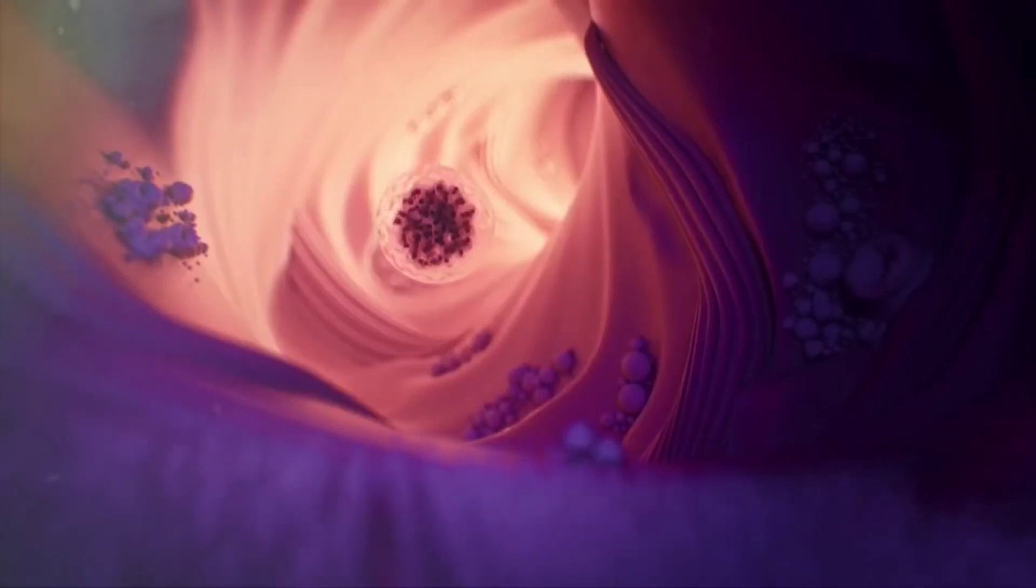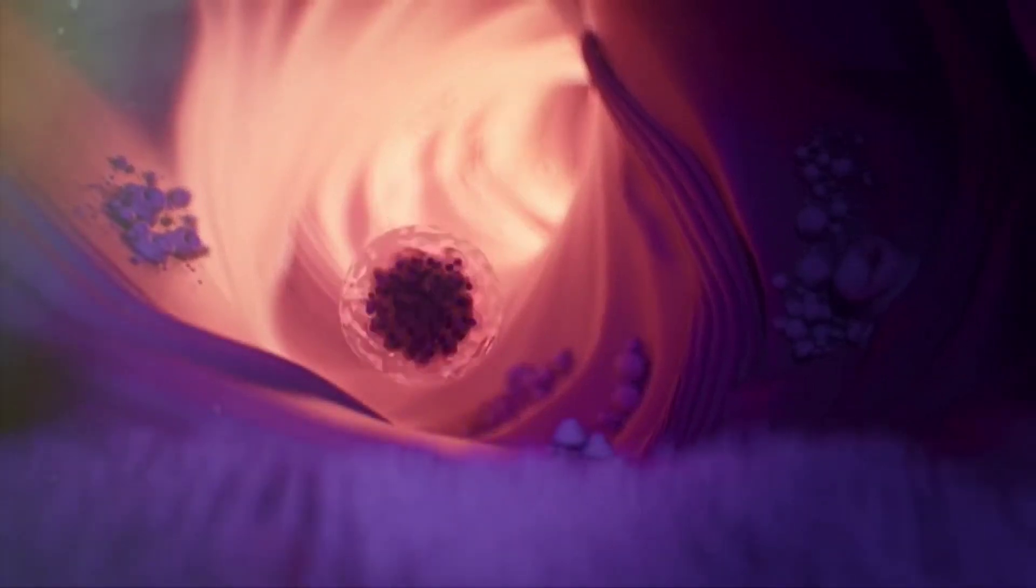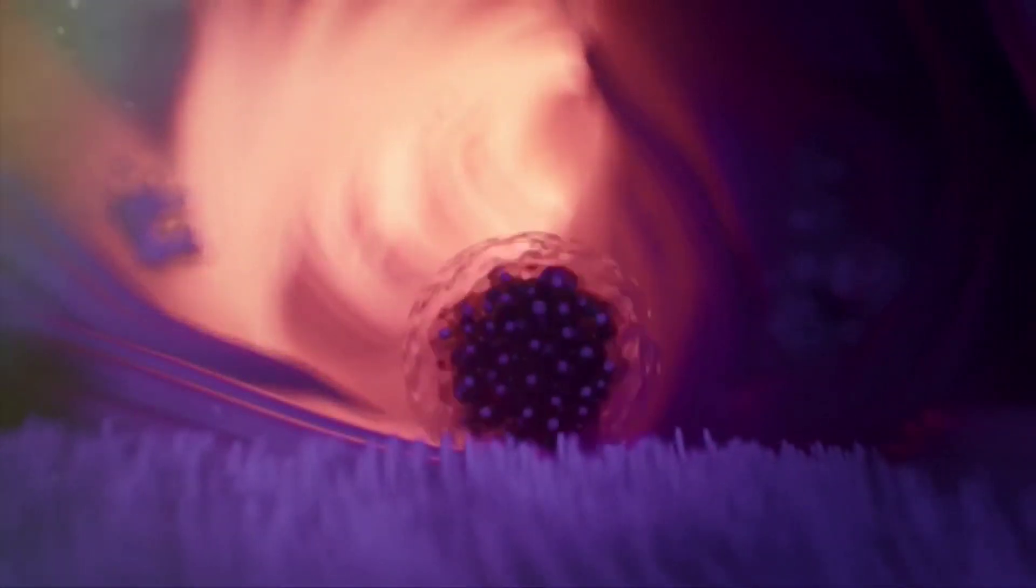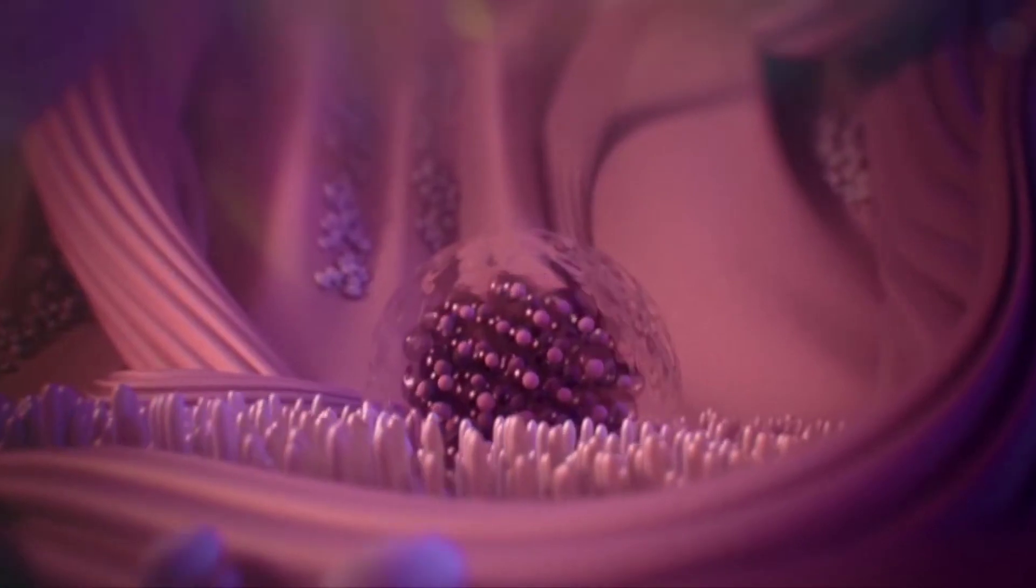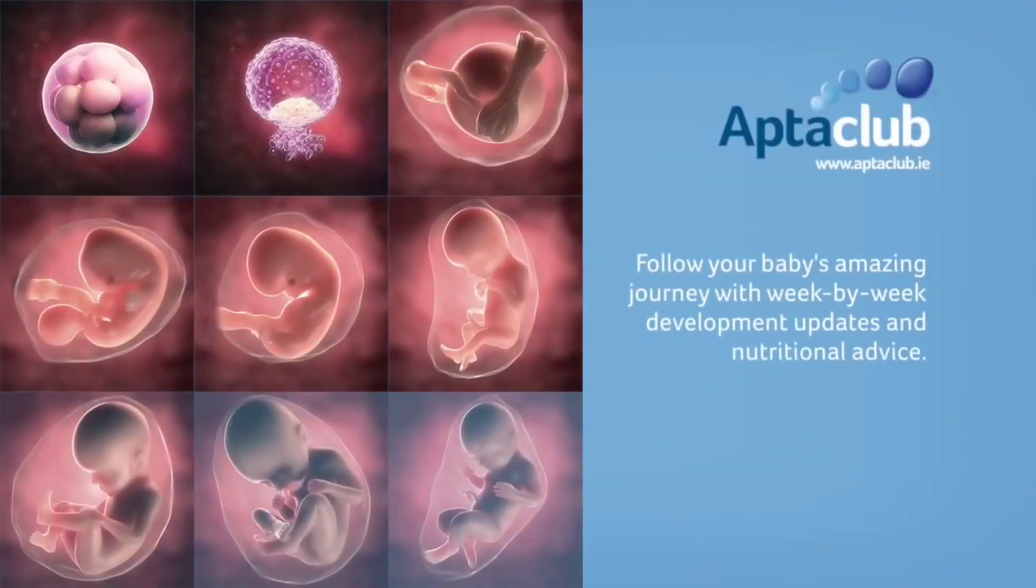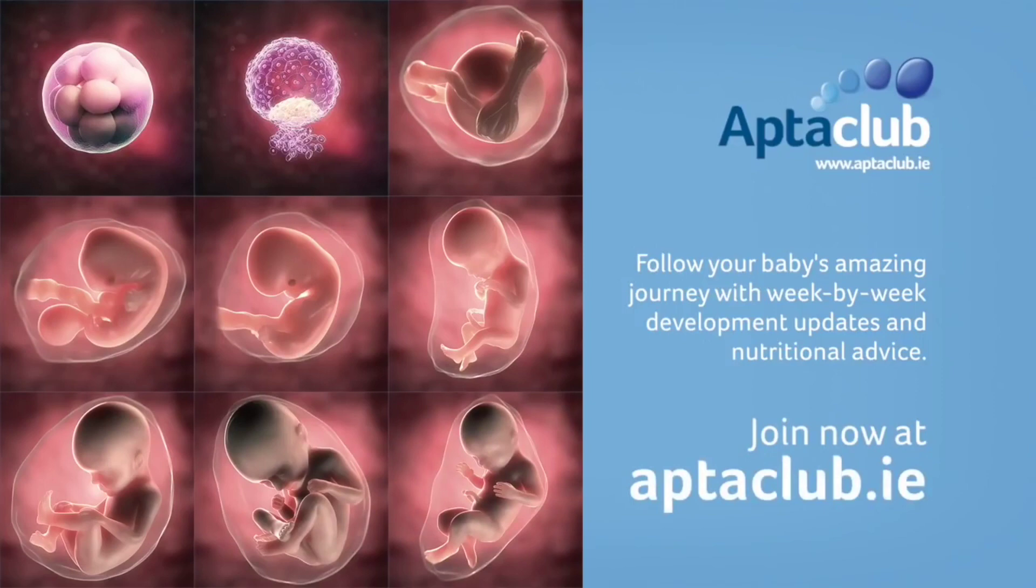a blastocyst is formed with an inner layer of cells making up the embryo and an outer layer which will protect and nourish the embryo. The blastocyst then finds a comfortable place to stay in the uterus for the next 40 weeks to develop and transform into a human being.